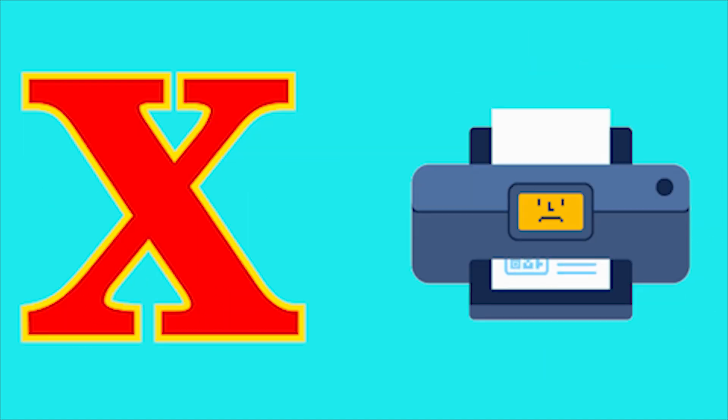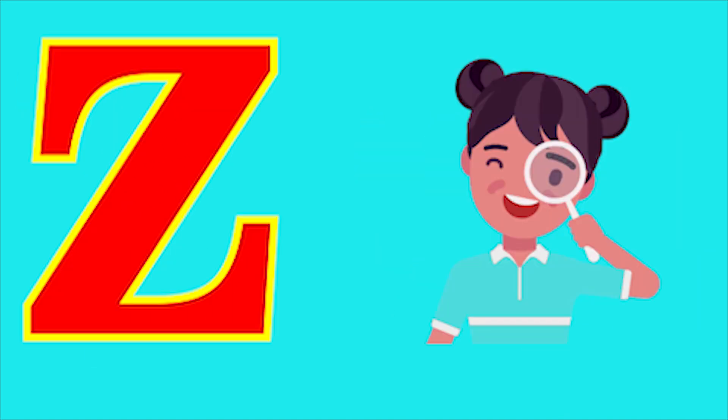V for vase, W for whale, X for zero, Y for yellow, Z for zoo.